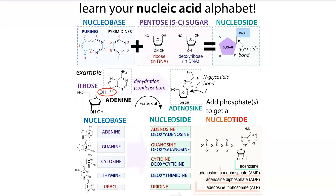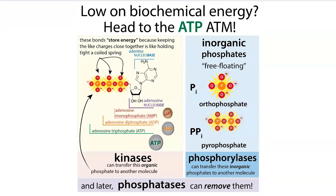To recap: a nucleoside is a nucleobase — adenine, guanine, cytosine, thymine, or uracil (thymine in DNA, uracil in RNA) — plus a sugar: ribose in RNA and deoxyribose in DNA. Add nucleobase plus sugar and you get a nucleoside. Add a phosphate group or groups and you get a nucleotide — the T stands for energy, since those phosphate groups provide energy. We refer to these as monophosphate (MP), diphosphate (DP), or triphosphate (TP), depending on whether they have one, two, or three phosphate groups.